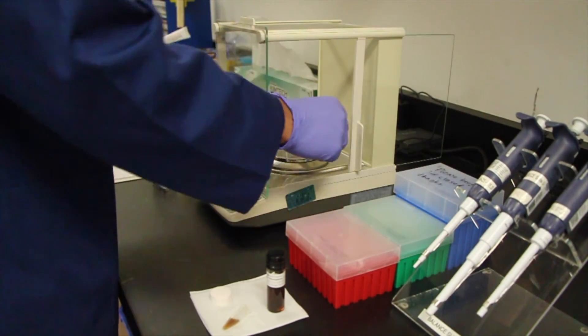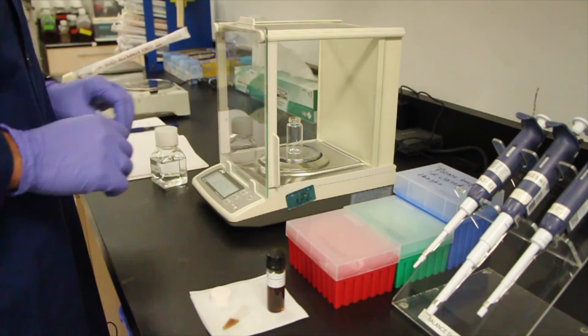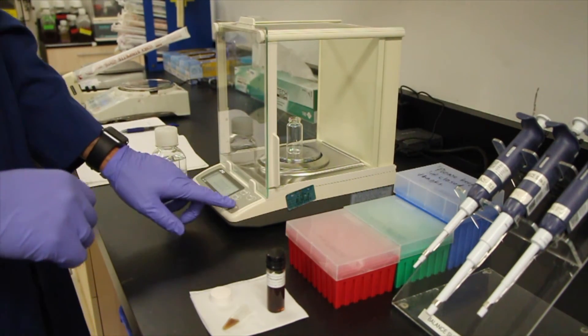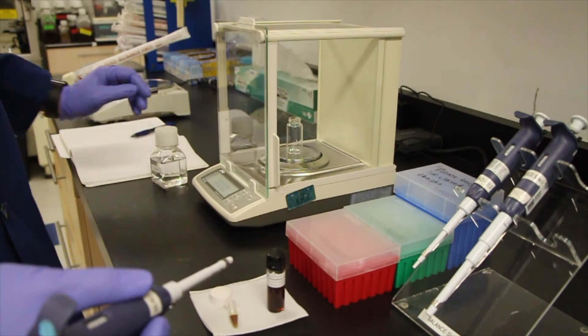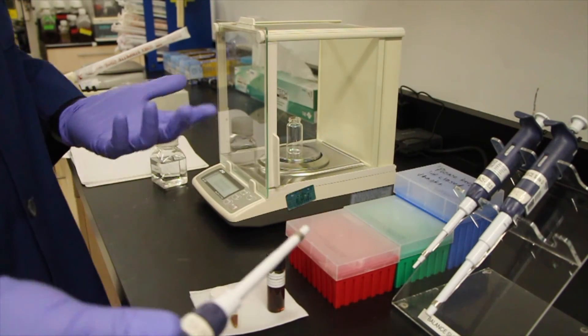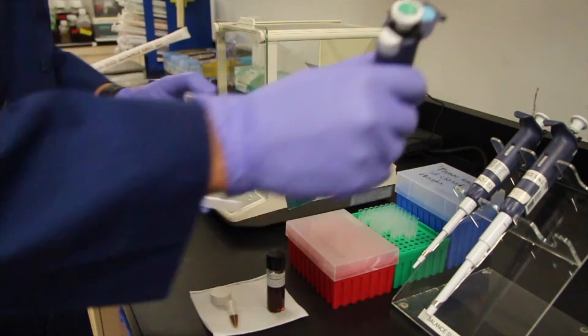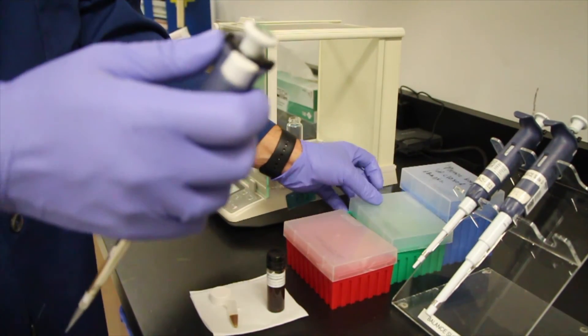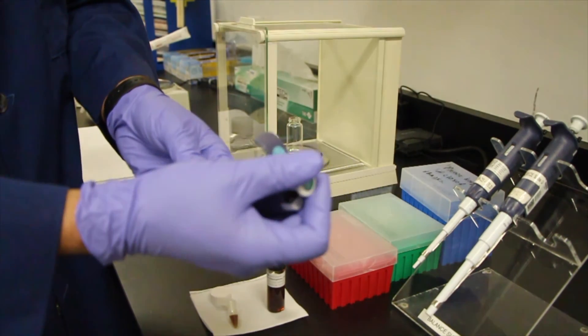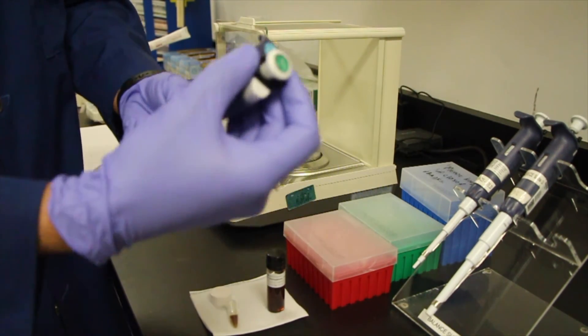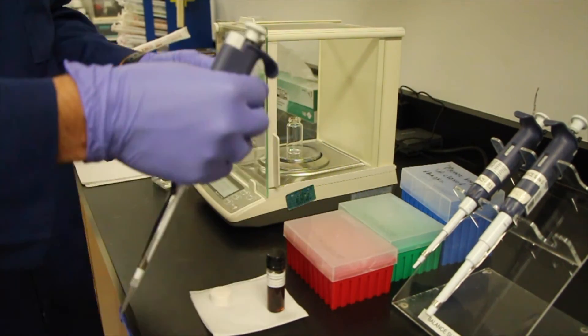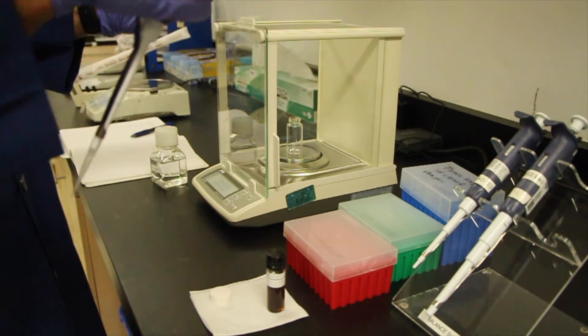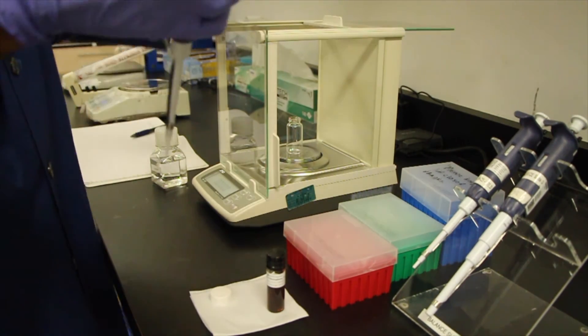We're going to start off by placing our Synth Vial inside the balance. Make sure you tare it. And I've pre-calculated my solutions because I already know the concentration of this particular material and the OD. If you didn't know you would have to prep a qualitative sample like we did in part 1 in order to approximate the OD and then you can subsequently prepare an analytical sample for the quantitative measurement.